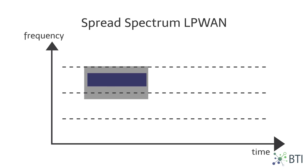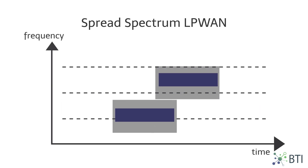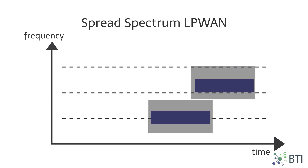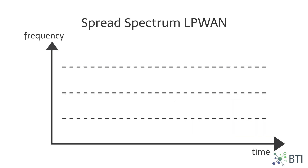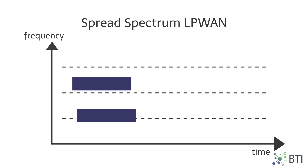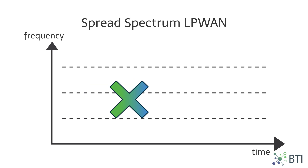However, spreading a narrow band signal over a wide band results in less efficient use of the spectrum. The risk of self-interference is high, which limits network capacity.